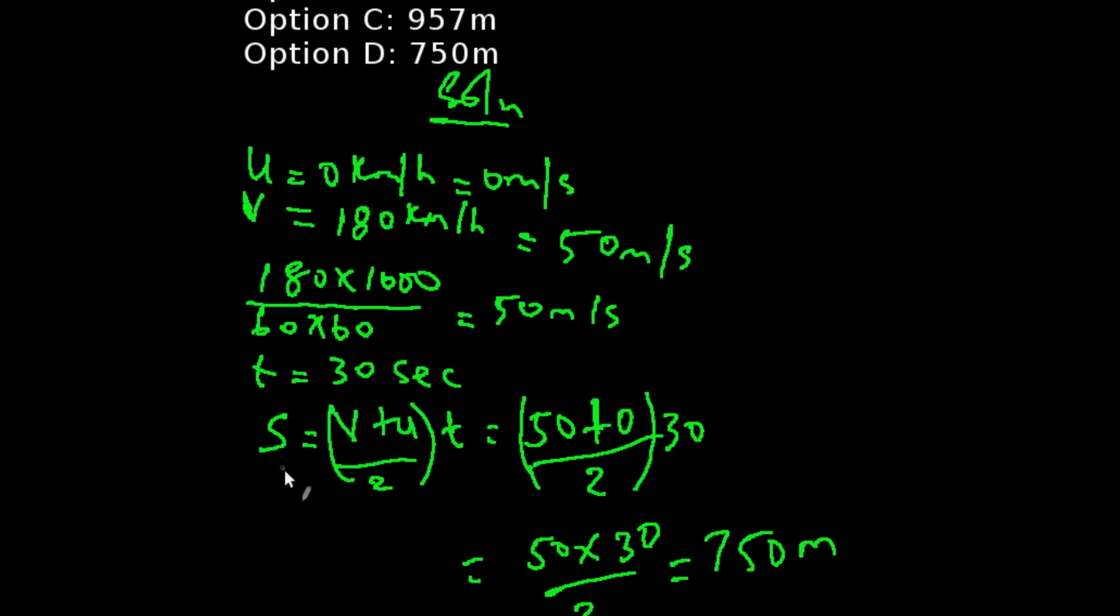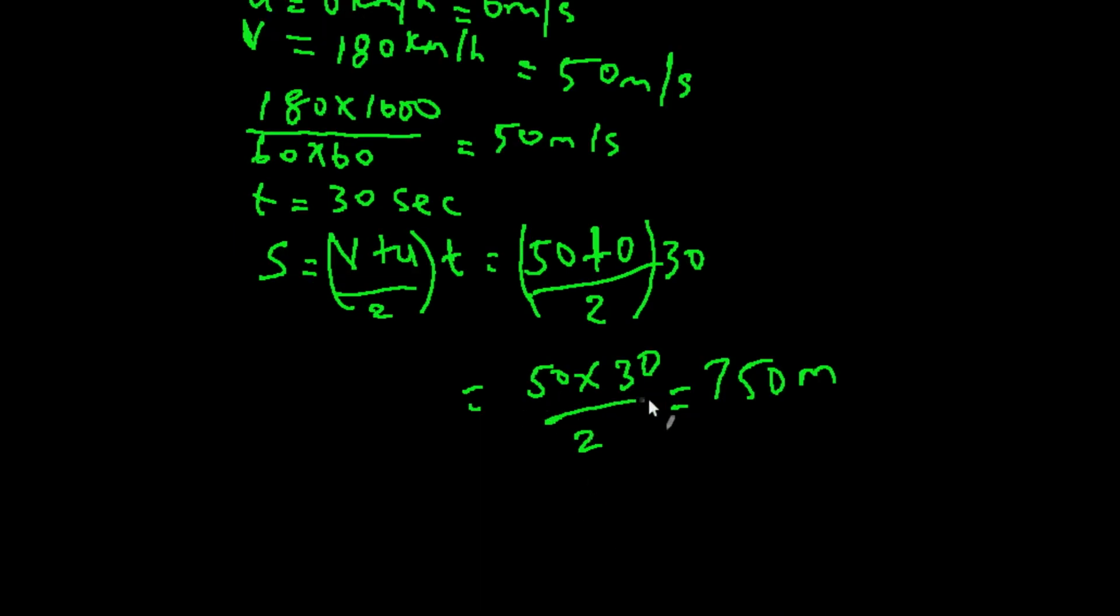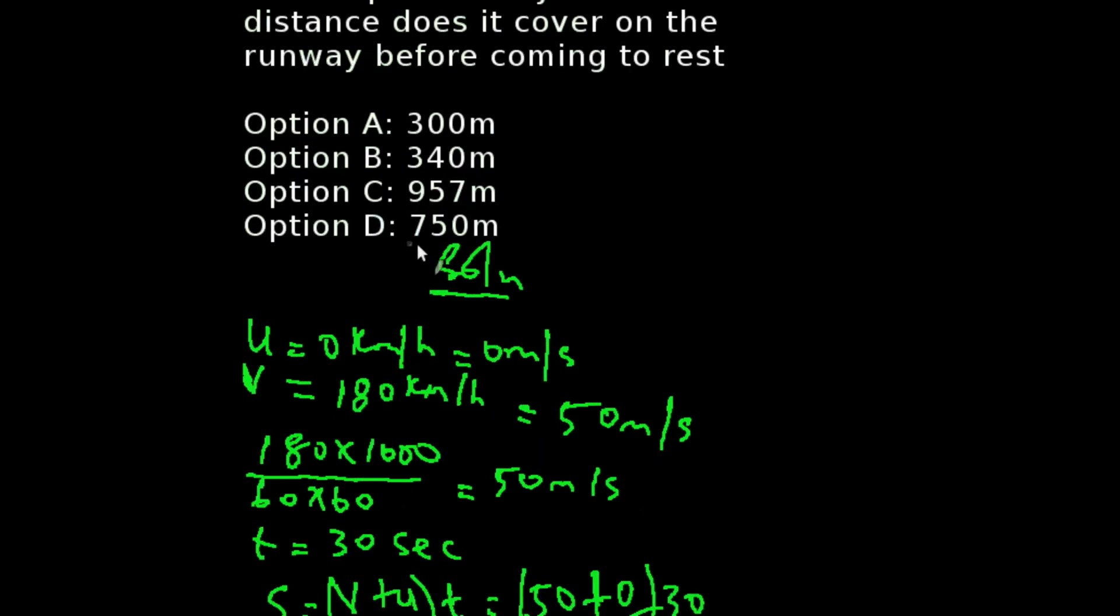We're going to be using the equation S equals V plus U all over 2 multiplied by T. That will simply give us 50 plus 0 all over 2 multiplied by T which is 30. That will give us 50 times 30 all over 2, this should be 1500 divided by 2, 750 meters. So our answer is option D.